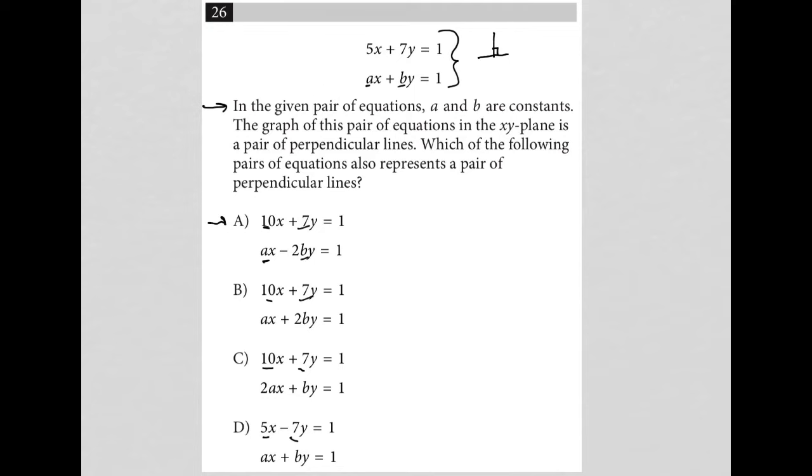I'm going to use the equations provided and rewrite this first equation into a format that makes it easy to determine the slope. I'm going to subtract 5x from both sides. I'll be left with 7y equals negative 5x plus 1. Then I'll divide everything by 7. The slope-intercept form of equation 1 is y equals negative 5 sevenths x plus 1 seventh.